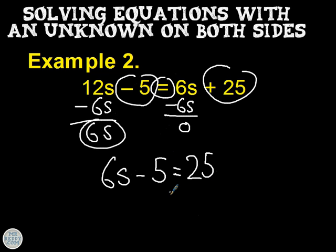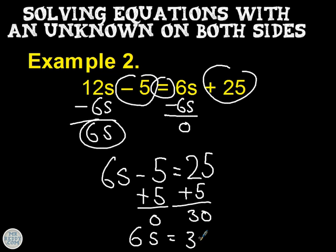And we can solve that in the way that we've solved these kind of equations before. Add 5 to both sides. And what you're left with is 6s equals 30. And then that solves to s equals 5 because you divide both sides by 6.